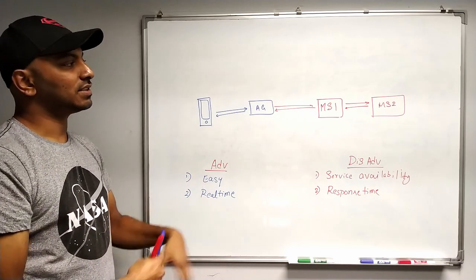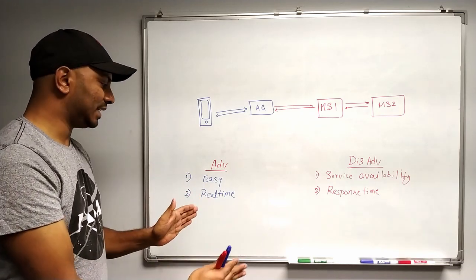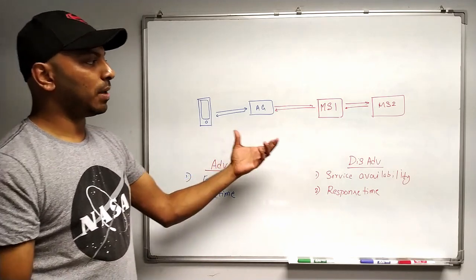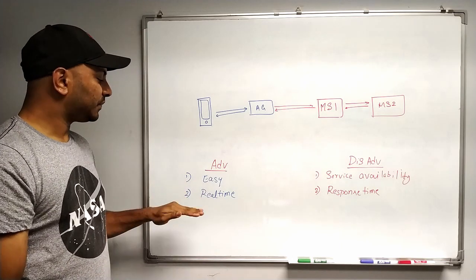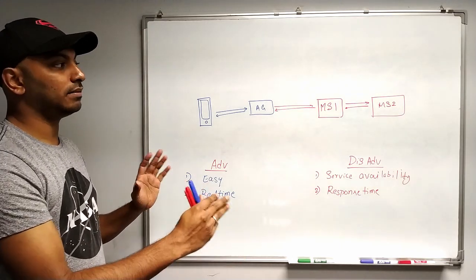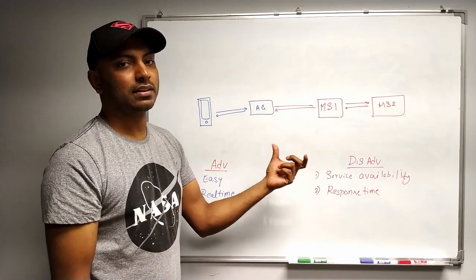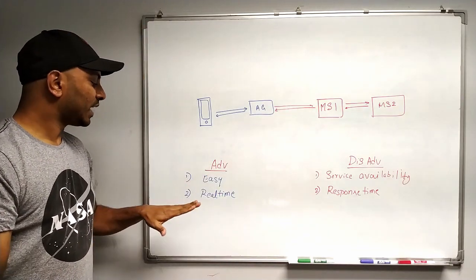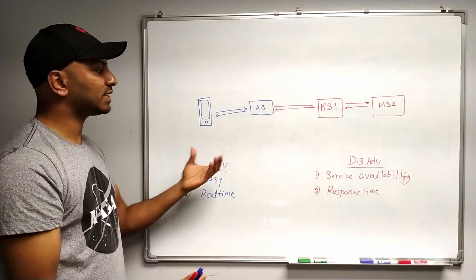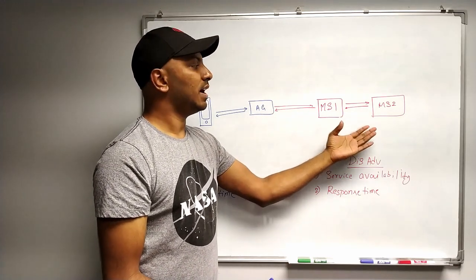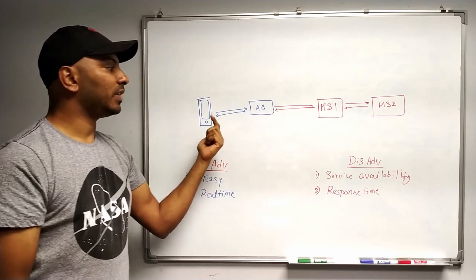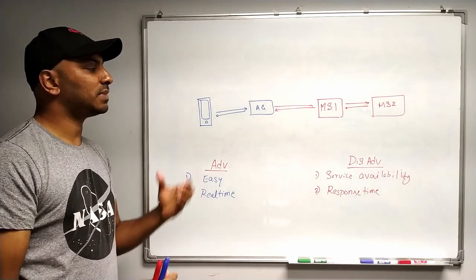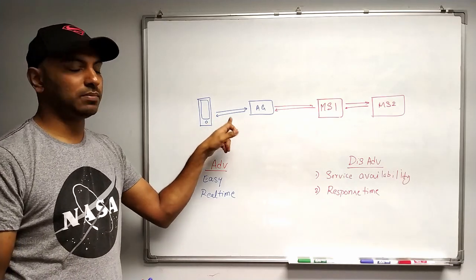The advantages of synchronous inter-microservice communication: first, it is very easy to implement because we are all familiar with REST and HTTP calls. It is also easy to handle different use cases and errors, because we know what error the other service returns immediately in real time, so we can make an immediate decision. The second advantage is real-time responses — even if calling many microservices, we get the response back within the same API call.